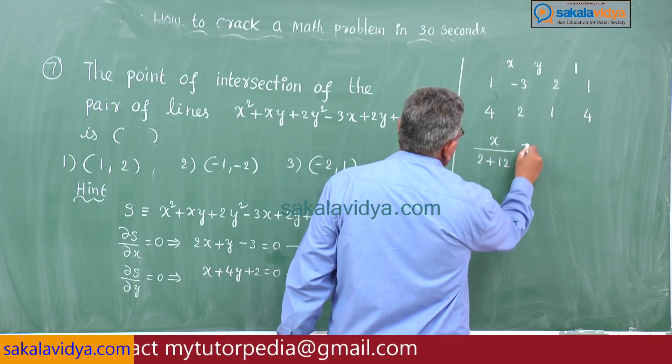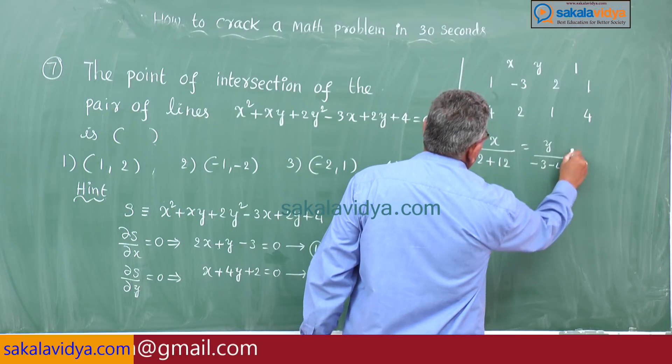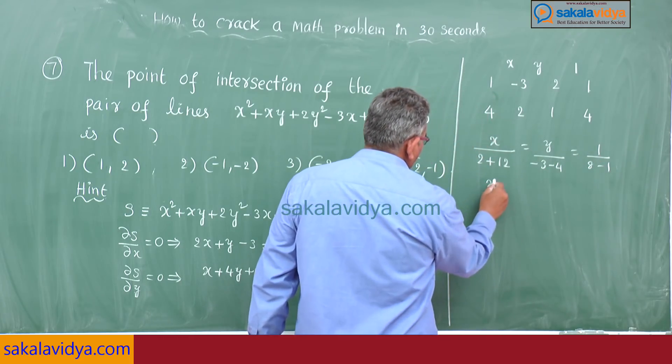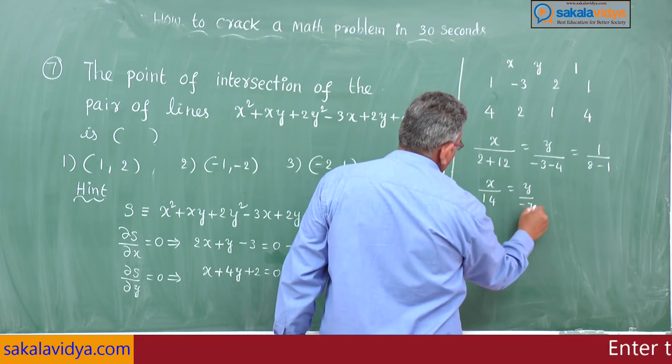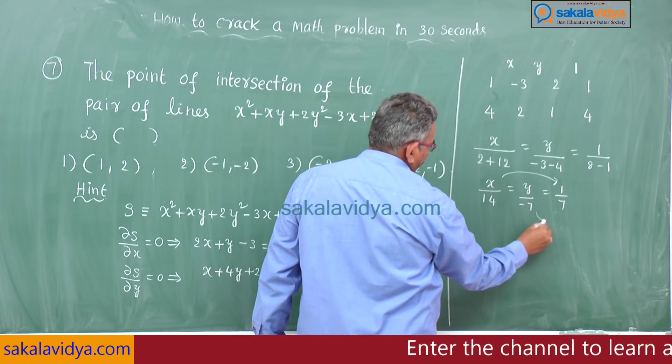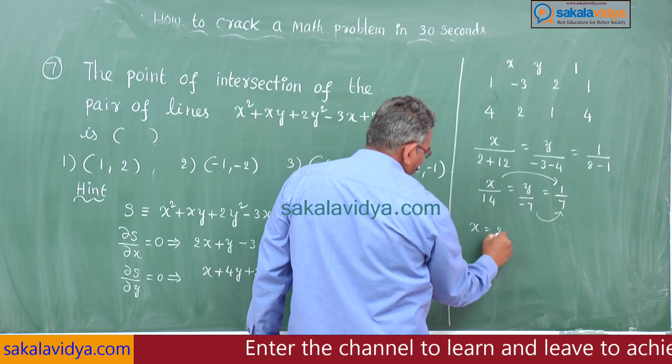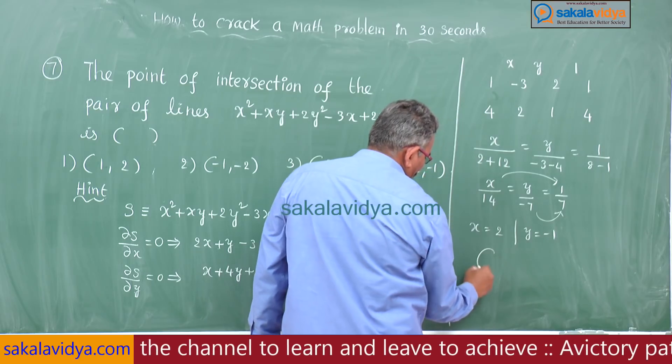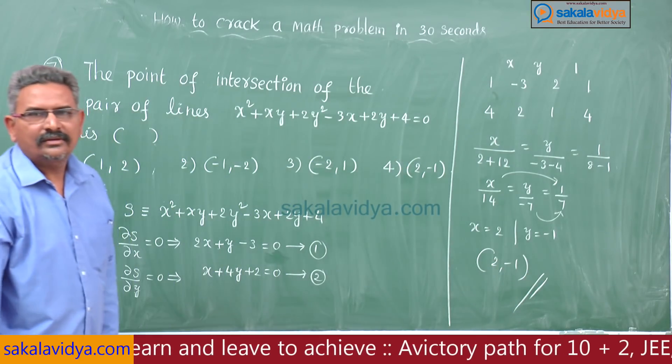Cross multiplication: 1 minus 3, 2, 1, 4, 2. x by 2 plus 12, y by minus 3 minus 4, 1 by 8 minus 1. x by 14, y by minus 7, 1 by 7. x is equal to 14 by 7 equals 2, y is equal to minus 7 by 7 equals minus 1. So 2 comma minus 1 will be the answer.